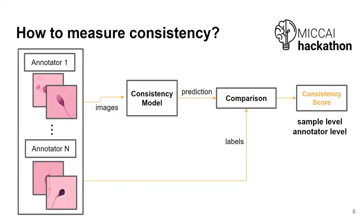In our approach to measure consistency, we defined a consistency model, which is trained using the data and which produces our reference annotation. Our goal is to compare the consistency of the annotations provided by the annotators against this reference given by the consistency model. With this, we can evaluate consistency at the sample level to find inconsistent samples, and at the annotation level to find annotators that are more frequently inconsistent with others. To compute annotation-level consistency, we used the Cohen's Kappa score, a metric that evaluates agreement between two parties — in our case, between the reference labels and the annotator labels.